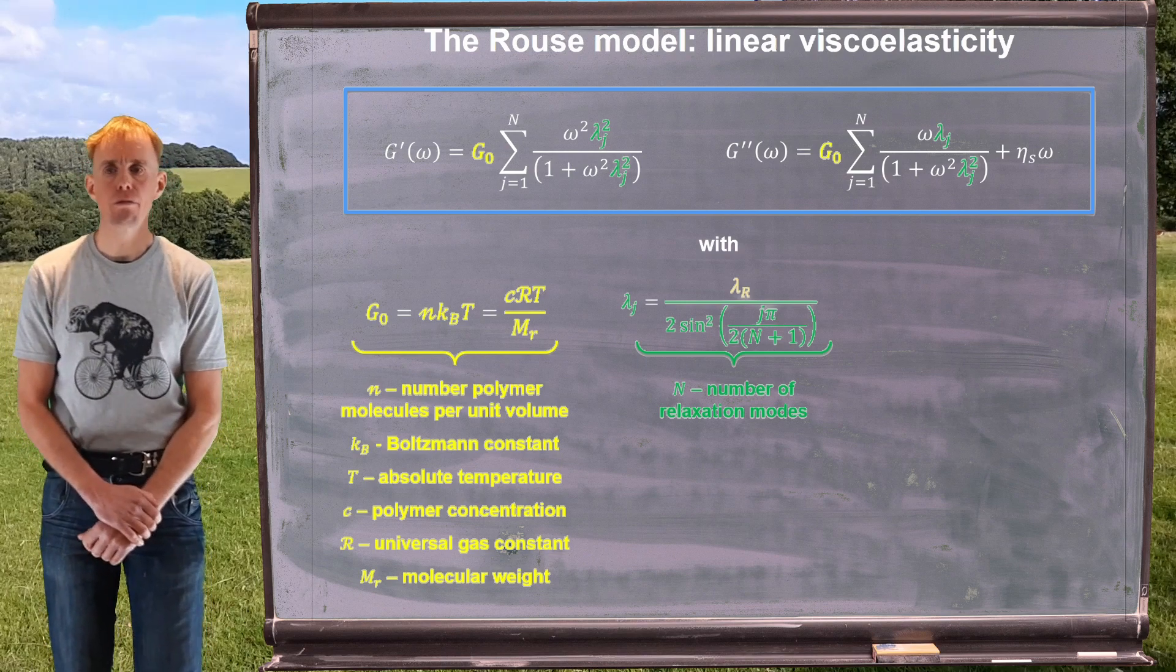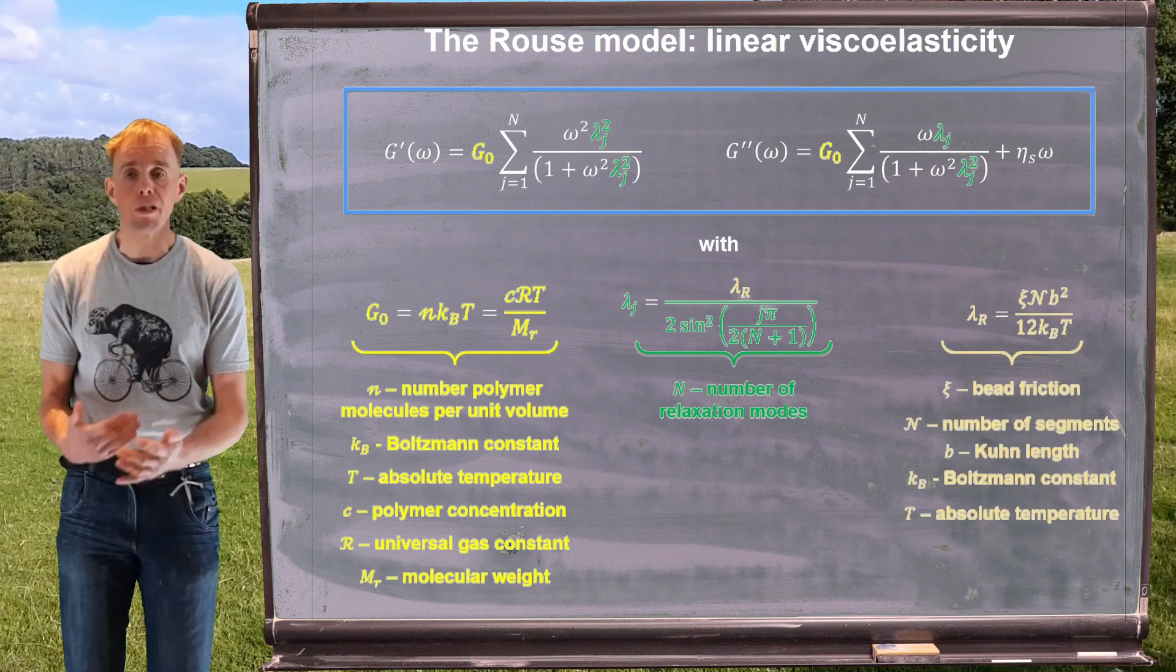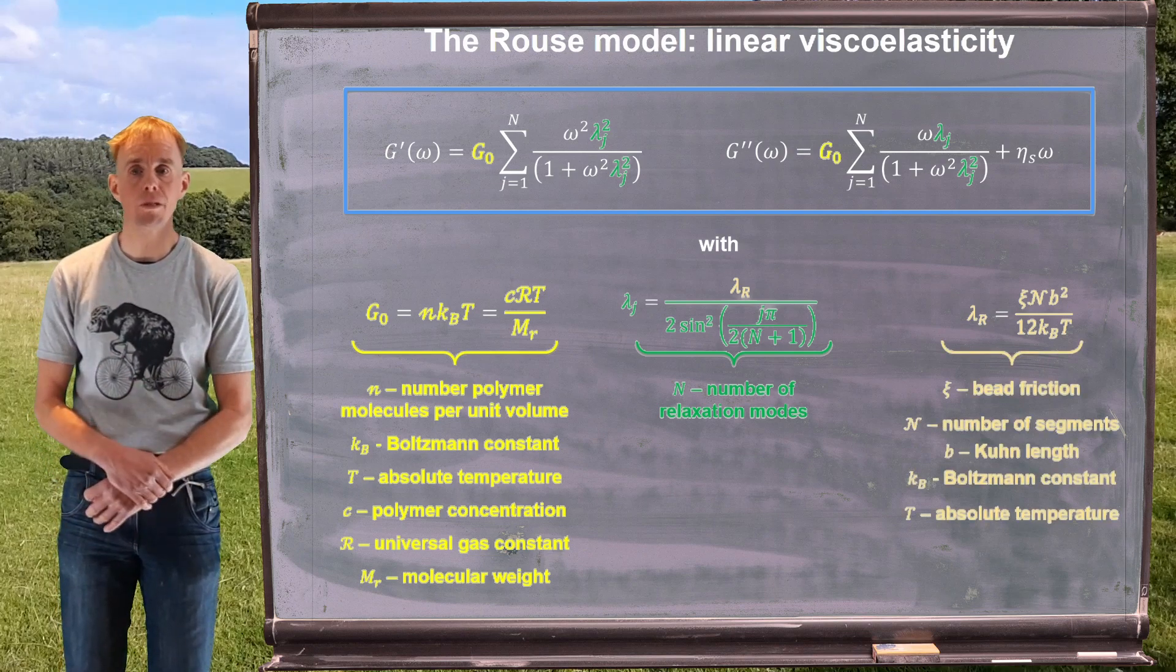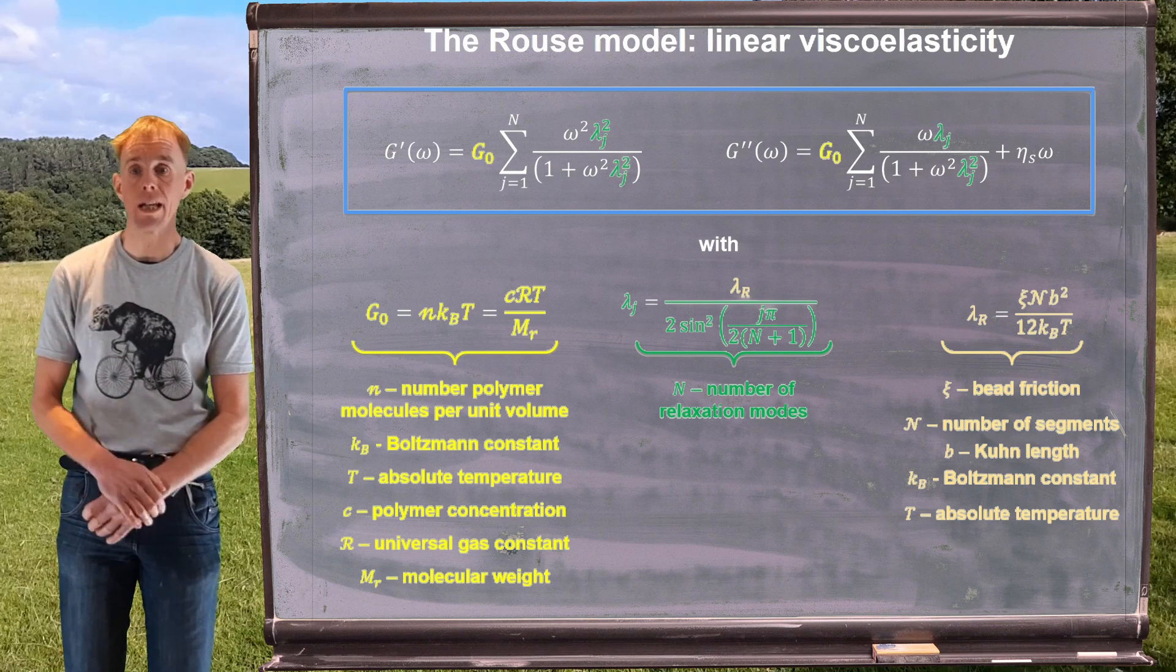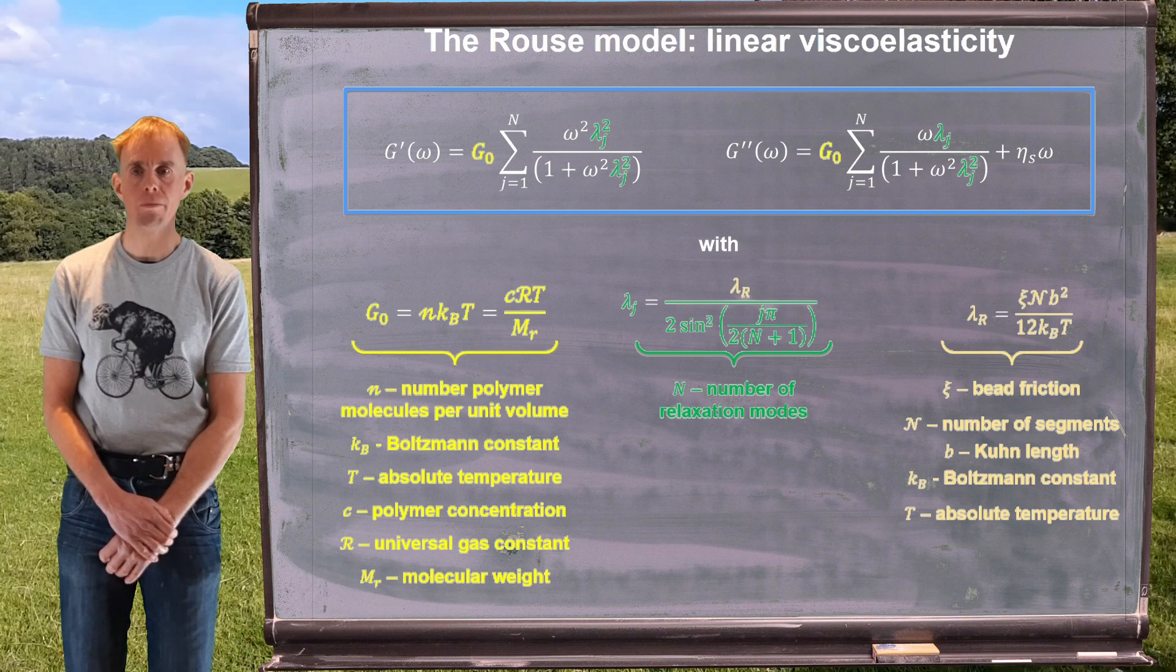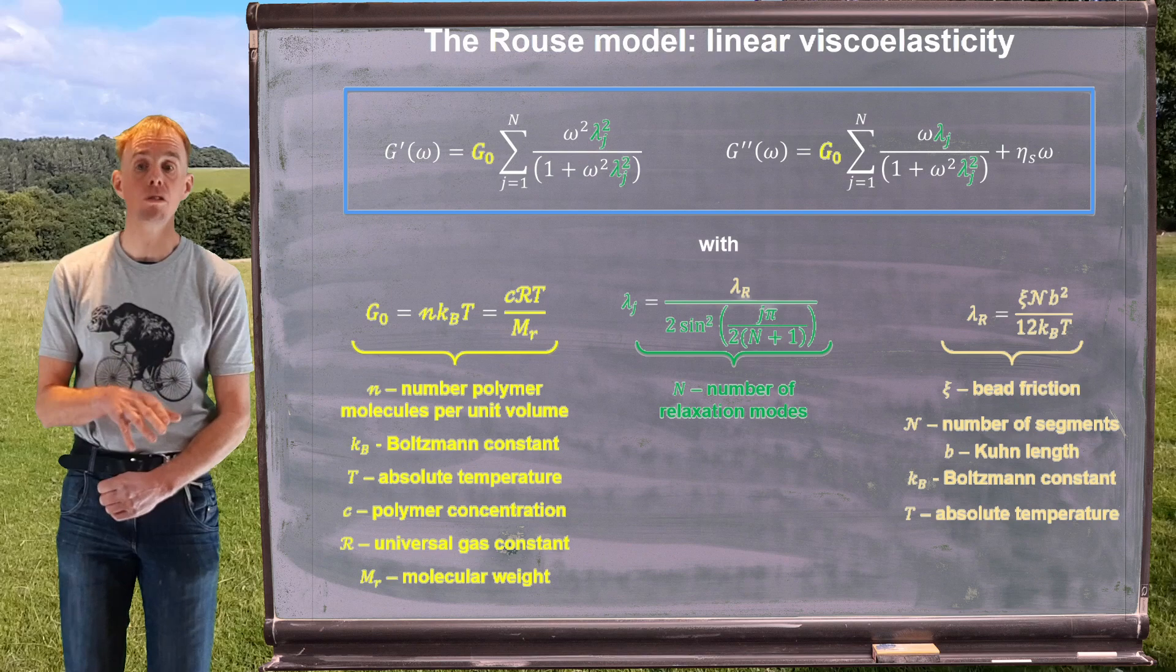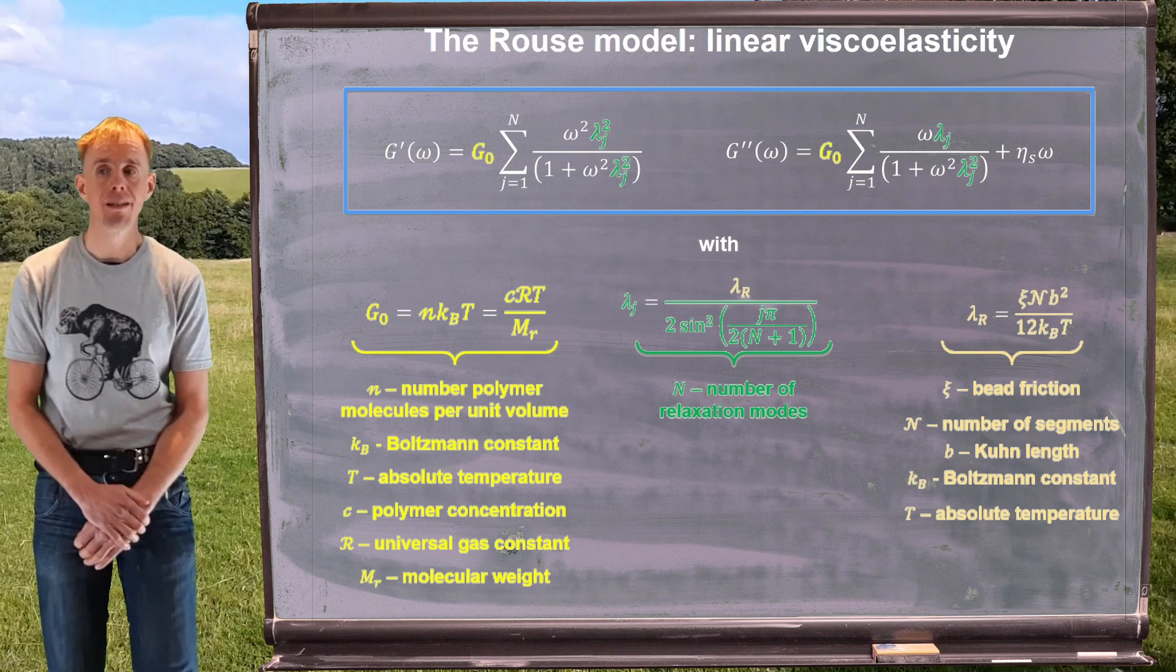The Rouse time is dependent on notions of polymer configuration, the number of polymer segments, the number of Kuhn segments, the Kuhn length, and the Boltzmann constant and a measure of bead friction. But it's very unusual to be working that out from first principles. However, what we might do is estimate that from experimental data.